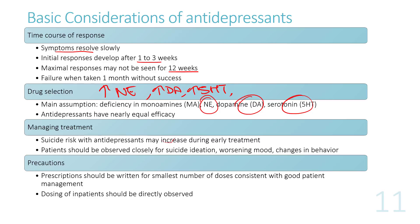Antidepressants have nearly equal efficacy, but which drug works depends on the individual patient. Importantly, suicide rate with antidepressants may actually increase during early treatment, because severely depressed patients may become cognizant enough on medication to form and follow through on a suicide plan.